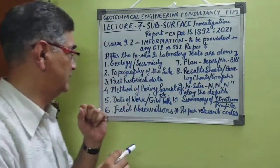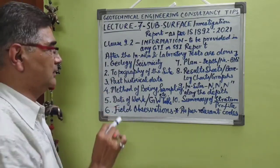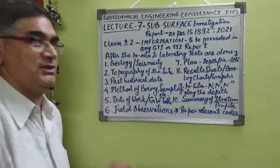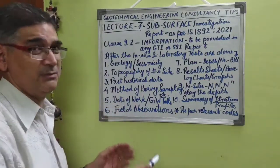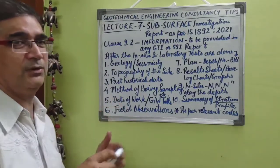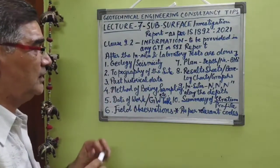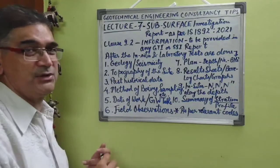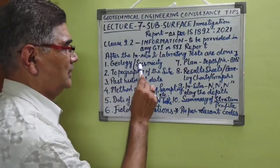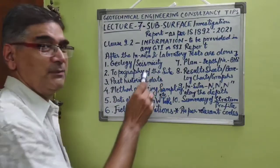Number one: when we start writing the report, it should first of all cover the details about the geology and the seismicity of that particular site. Seismicity means which seismic zone of India the site falls in. In India we have four seismic zones, and this is considered in both report preparation and further structural design based on the recommendations given.